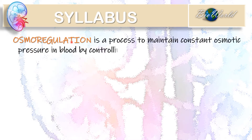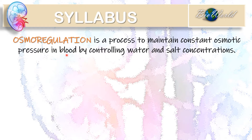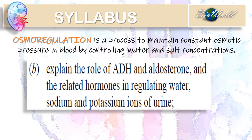Osmoregulation is a branch of homeostasis. In osmoregulation, we try to maintain a constant osmotic pressure in our blood by controlling either water concentrations or salt concentrations. In today's video, I will be discussing the role of the hormone ADH in controlling the water concentration in our blood.